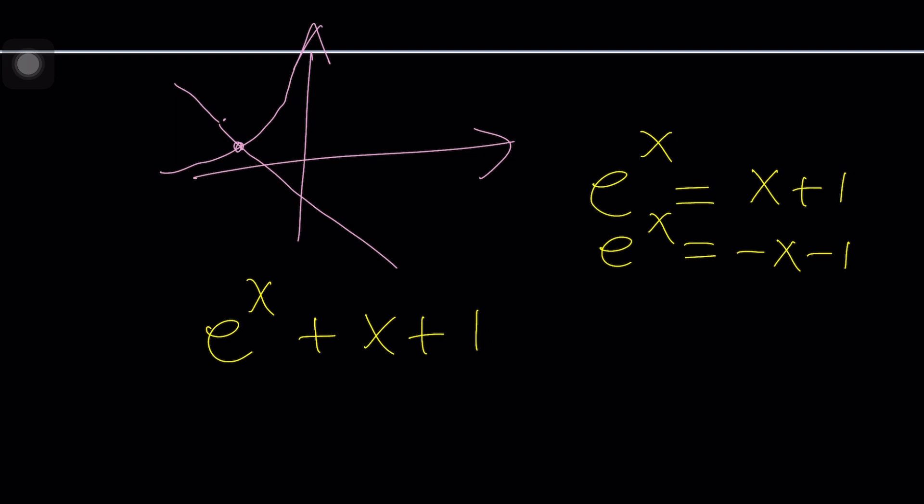Can we still use 0? No. Can we use negative 0? No. It's the same thing. So how do we solve this problem? The presence of E to the X along with a linear polynomial is actually promising. And I'll tell you why in a little bit that is promising.